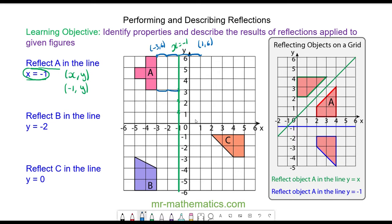We go two units away and again two units on the other side. So this edge here is reflected to here, and now I can just draw the shape out again keeping it congruent, which means identical, but this time facing away from the mirror line.